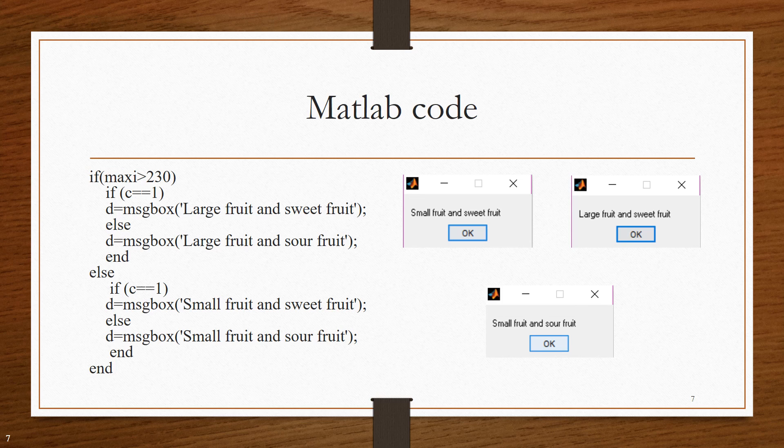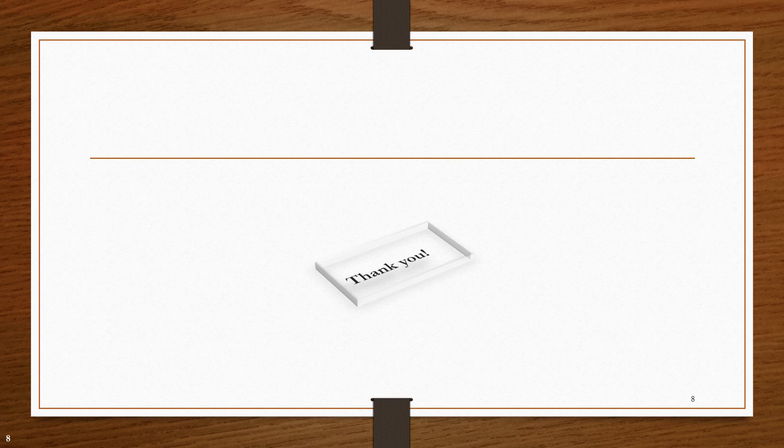So, based on this method, the fruit is being graded into 4 types: large fruit and sweet fruit, large fruit and sour fruit, small fruit and sweet fruit, small fruit and sour fruit. Thank you.